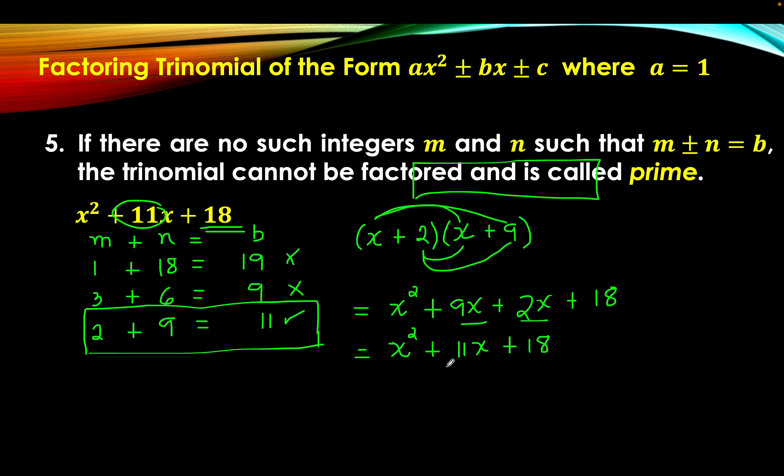There are 5 simple steps on how to factor a trinomial of the form ax squared plus or minus bx plus or minus c where a equals 1. Step 1: list all pairs of integers whose product is c. Step 2: choose a pair m and n whose sum or difference is b. Step 3: write the factor as the quantity x plus or minus m times the quantity x plus or minus n. Step 4: verify the answer. Step 5: if no integers satisfy the condition, the trinomial is a prime polynomial.